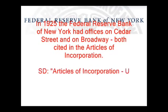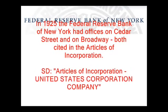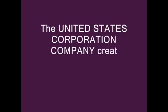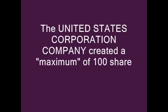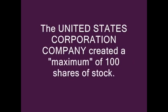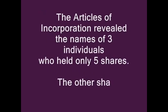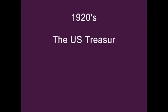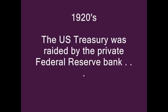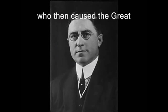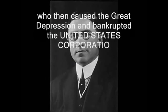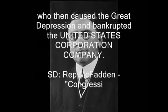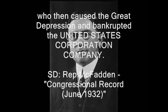Note: In 1925, the Federal Reserve Bank of New York had offices on Cedar Street and on Broadway, both cited in the Articles of Incorporation. The United States Corporation Company created a maximum of 100 shares of stock. The Articles of Incorporation revealed the names of three individuals who held only five shares — the other shareholders were not identified. 1920s: The U.S. Treasury was raided by the private Federal Reserve Bank, who then caused the Great Depression and bankrupted the United States Corporation Company. Source document: Representative Louis McFadden, Congressional Record, June 1932.